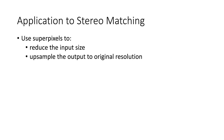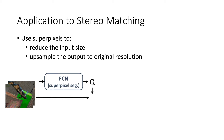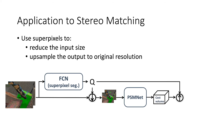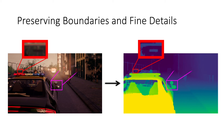To demonstrate the benefit of our subpixel network, we use the predicted subpixels to downsample the input images to an existing stereo matching network called PSMNet, and upsample the estimated cost volume using the same subpixel association for full resolution prediction. The results show our method can better preserve object boundaries and find details.